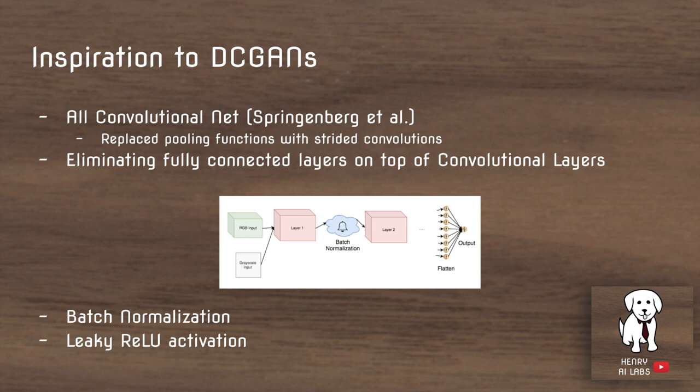The inspiration the authors had for DCGANs around the time of this publication is the all-convolutional net and eliminating fully connected layers on top of convolutional layers. The idea was that instead of having operations like max pooling and average pooling — two-by-two kernels that group the statistics of pixels together and decrease the spatial resolution by a factor of two — so a 32-by-32 image is processed into a 16-by-16 through these pooling functions. These are a really popular foundation of convolutional networks, appearing in papers like AlexNet.